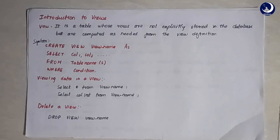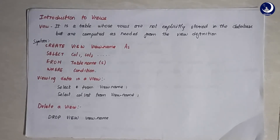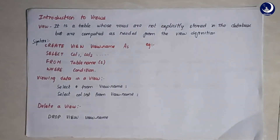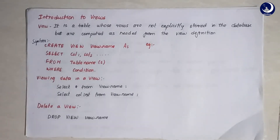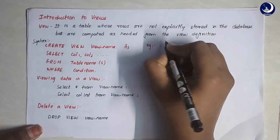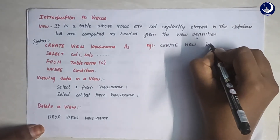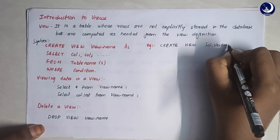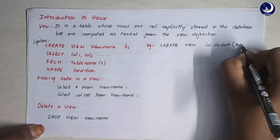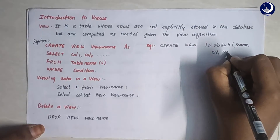Let's see the syntax for creating a view. The syntax goes: CREATE VIEW view_name AS SELECT column1, column2 — it can be a column list from a single table or a collection of tables — WHERE condition. For example, from the previous student and enrolled tables, I want the details of science students. So: CREATE VIEW science_students — and I want the columns S.SID, S.name, and E.course.